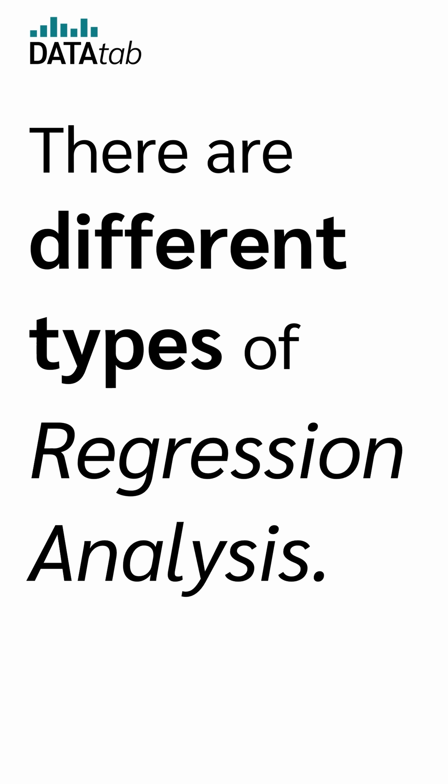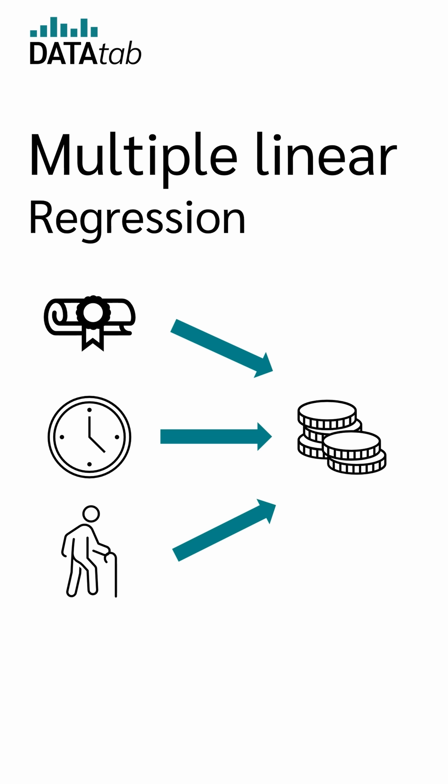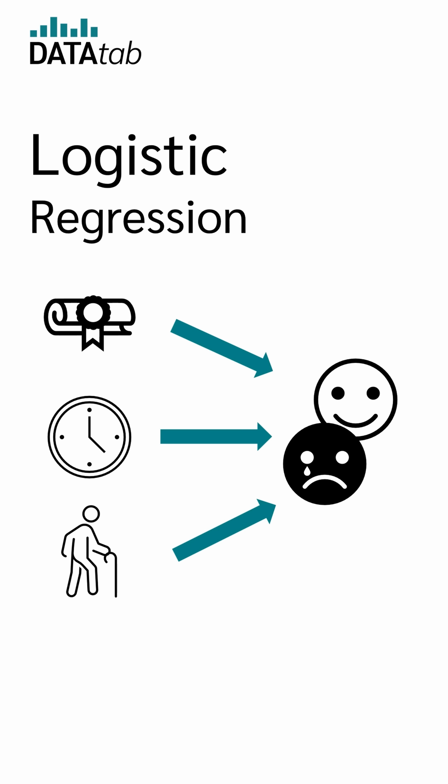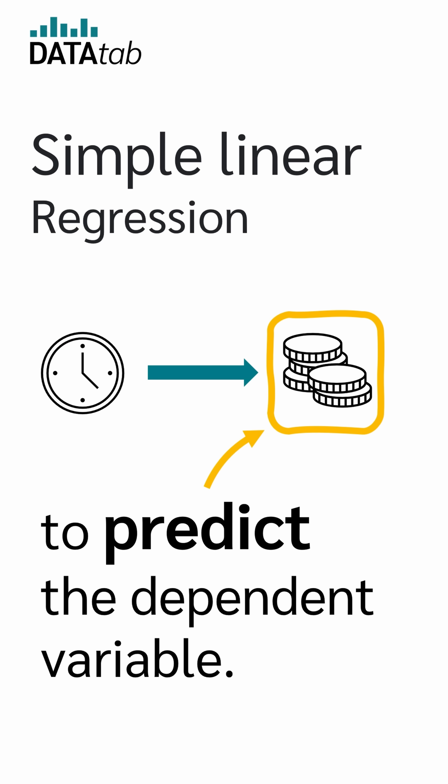Now there are different types of regression analysis. There is the simple linear, multiple linear, and logistic regression. In simple linear regression, we use just one independent variable to predict the dependent variable.